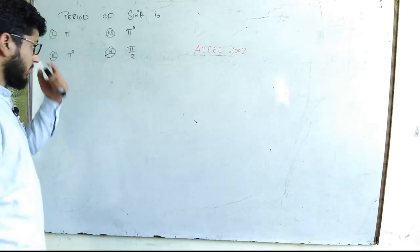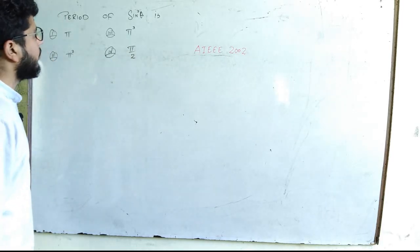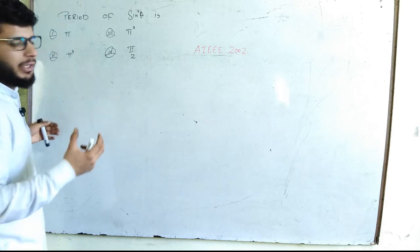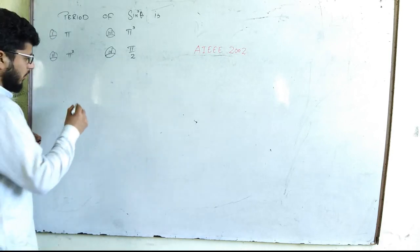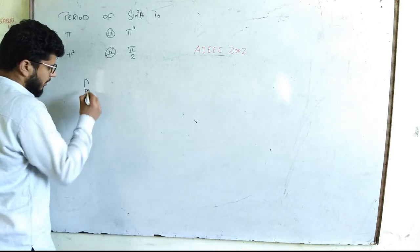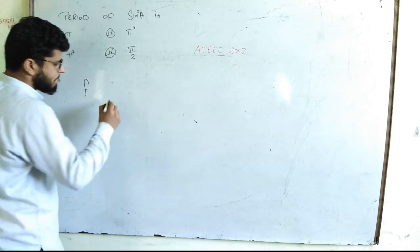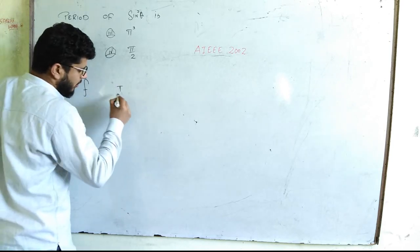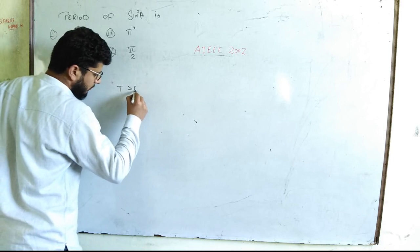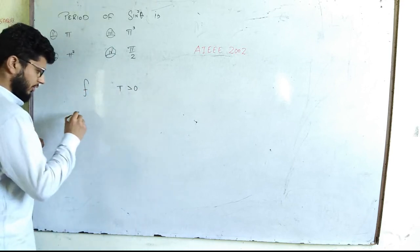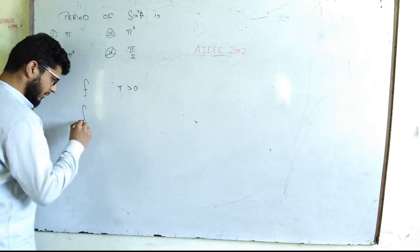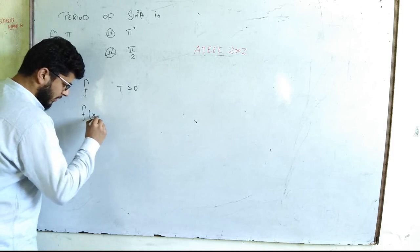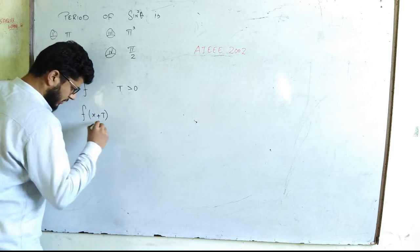Before doing this solution, I would like to tell you something about what's the period of the function. Now, given a function f, a positive number t is said to be a period of f if something like this happens.